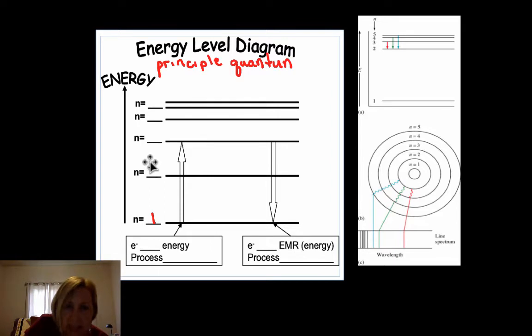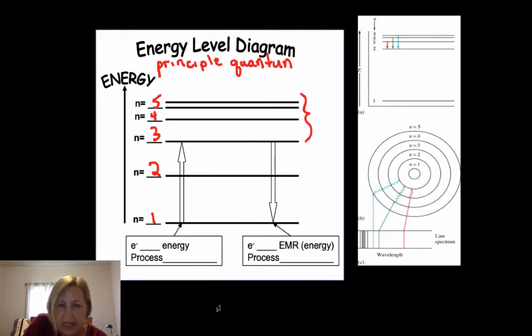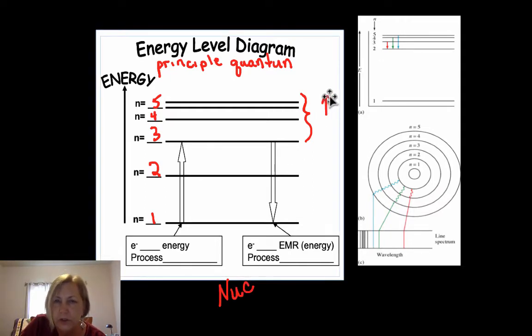And it can be one, two, three, four, five, and so forth. And you notice that the further they get, this would be our nucleus down here, and the further electrons get from the nucleus, the closer these energy levels are to one another.